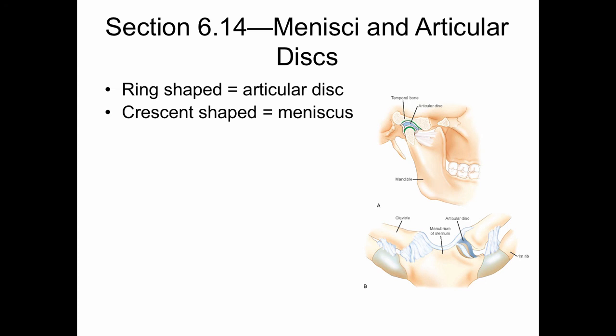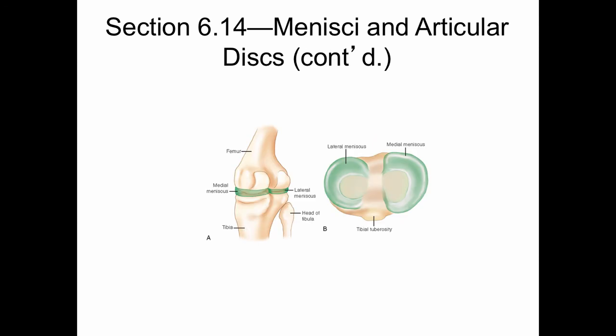Menisci and articular discs are often found within the joint. The ring-shaped articular disc and the crescent-shaped meniscus help to improve the congruence of a joint, maintain normal joint movements, cushion the joint, and act as shock absorbers. Examples include the knee joint showing the two menisci in a posterior medial view and a proximal superior view of the tibia.